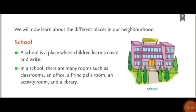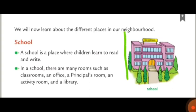We will now learn about the different places in our neighborhood. Ab hum sikhenge humaare aaspaas ke neighborhood mein jo alag-alag prakar ke places hai unke baare mein. First, school. A school is a place where children learn to read and write. Yeh school ka picture hai, jahan pe bachche aate hai padhne ke liye, likhne ke liye.